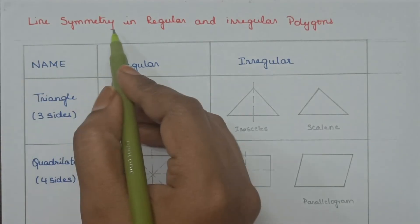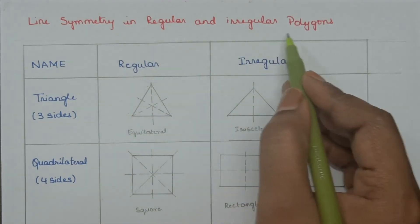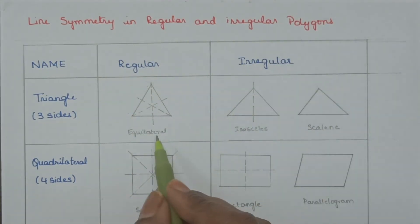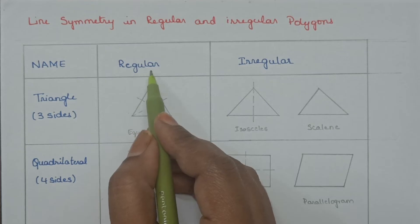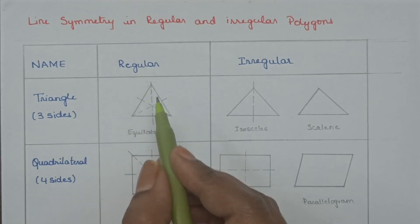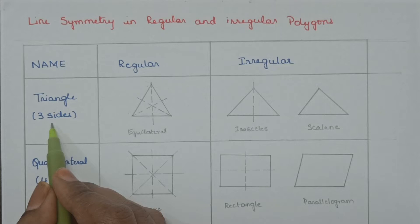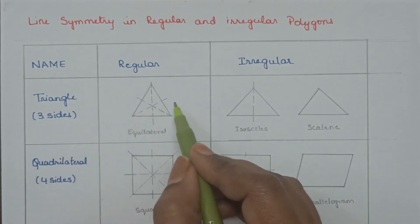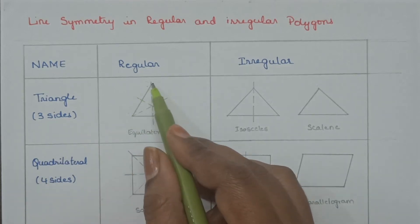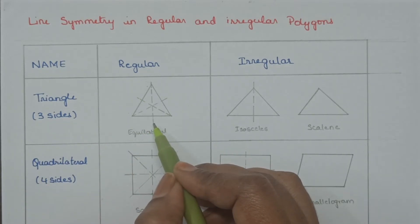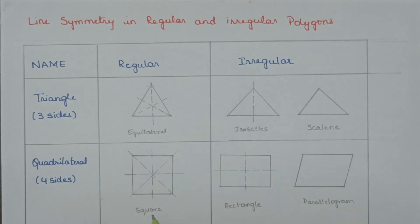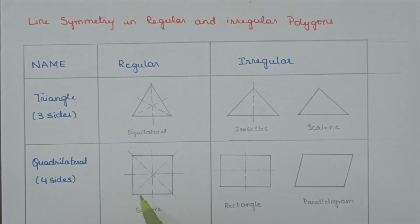Line symmetry in regular and irregular polygons. Equilateral triangle is a regular polygon, so the number of lines of symmetry equals the number of sides — three lines of symmetry. Square is a regular polygon with 4 sides, so the number of lines of symmetry is equal to 4.